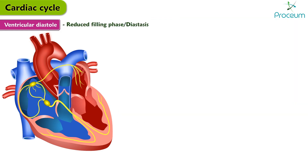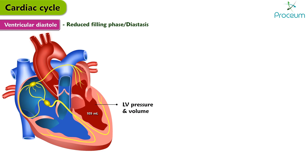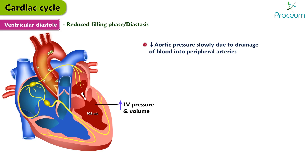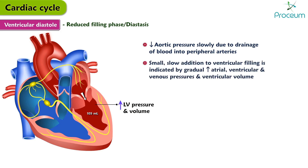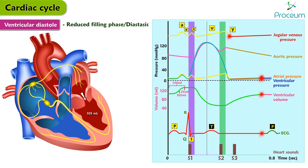Reduced filling phase or diastasis. It is a period of slow ventricular filling and its duration depends on the heart rate. The left ventricular pressure and volume slowly increase due to slow filling. The aortic pressure decreases slowly due to the drainage of blood into the peripheral arteries. This slow addition to ventricular filling is indicated by gradual rises in atrial, ventricular, and venous pressures and in ventricular volume. The end of the isoelectric TP segment is recorded on the EKG.